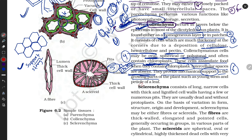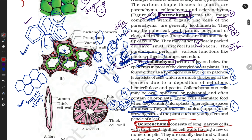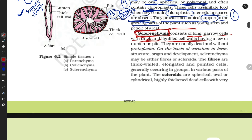Now moving toward sclerenchyma. According to their structure, sclerenchyma cells are long and sharp at the ends. They are long, narrow cells with thick and lignified cell walls — different from both parenchyma and collenchyma.